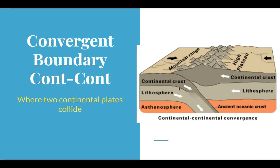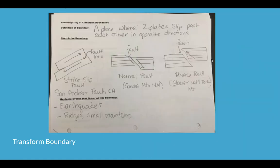When two continental crusts collide, there are no volcanoes — and here's why: continental crust is so much less dense that it never makes it down into the asthenosphere to melt. The Himalayas formed when two pieces of continental crust collided, creating some of the biggest mountain ranges in the world. There are no volcanic mountains, but huge earthquakes can occur as these mountain ranges form. There's also an optional drawing activity for practicing the different boundary types.